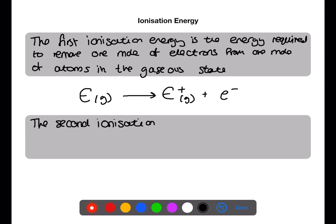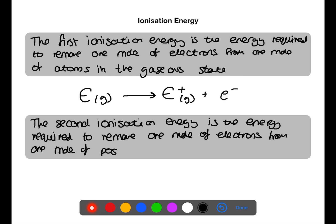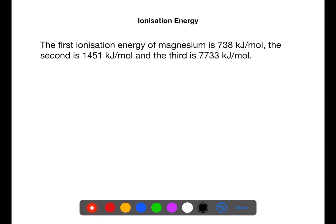The second ionization energy is the energy required to remove one mole of electrons from one mole of positive ions in the gaseous state and can be represented as follows. Let's look in more detail at ionization energy. The first ionization energy of magnesium is 738 kilojoules per mole. The second is 1451 kilojoules per mole and the third is 7733 kilojoules per mole.